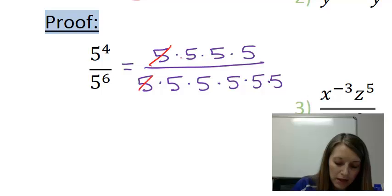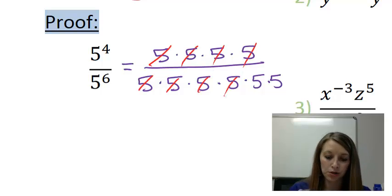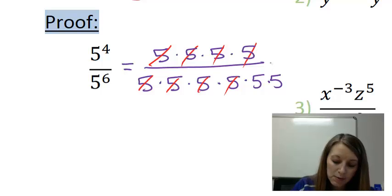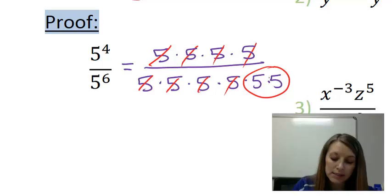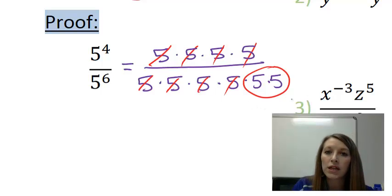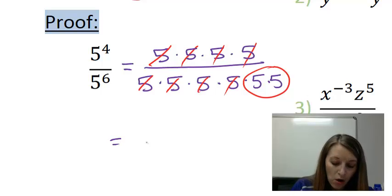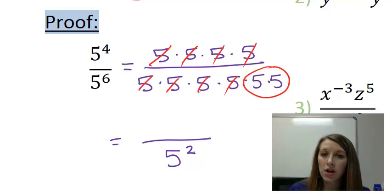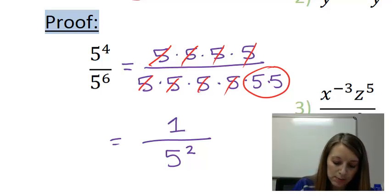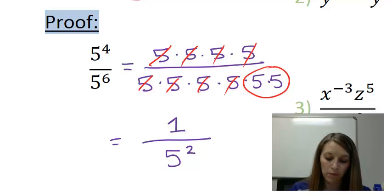We know that these cancel out just the way they did back in property number 2. That leaves me with 2 of these 5s left over, but notice this time I have them left over in the denominator. That was different than last time. So I have 5 squared left in the denominator. Of course, everything cancelled in the numerator, so that tells me I have 1 in the numerator.